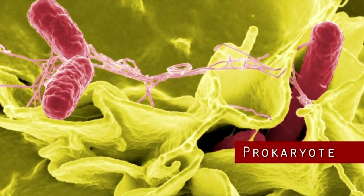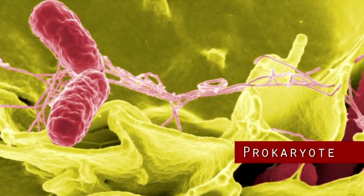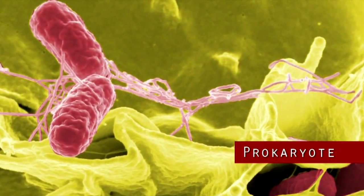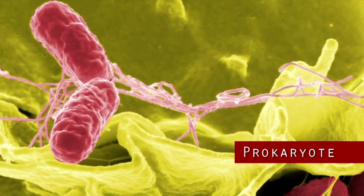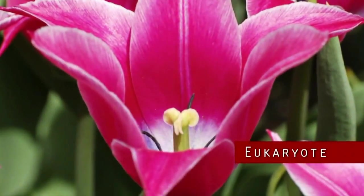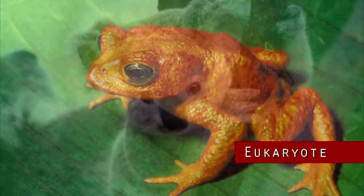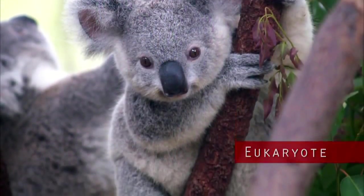Prokaryotes are single-celled organisms and include bacteria and some algae. On the other hand, eukaryotic cells make up more complex organisms, like plants and animals.